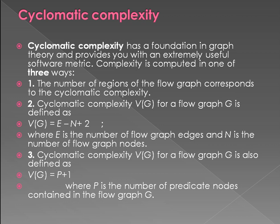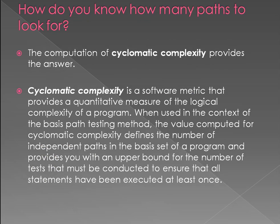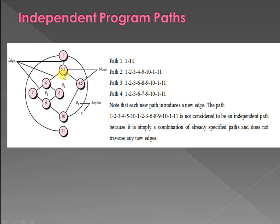The third way of knowing complexity: V(G) equals P plus 1. What is P? P stands for predicate node. What is a predicate node? A predicate node means any node in the diagram which contains two or more edges emanating from that particular node. We call it a predicate node.